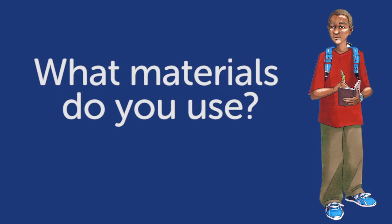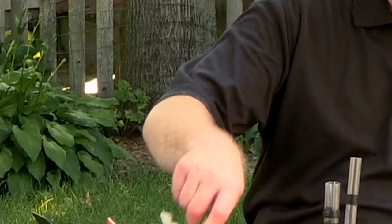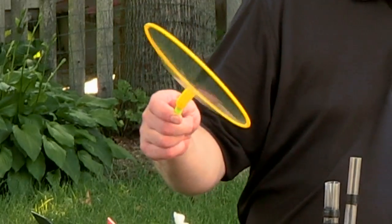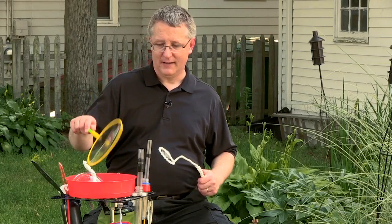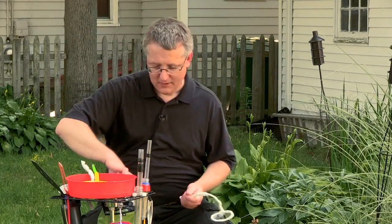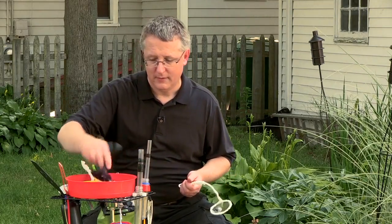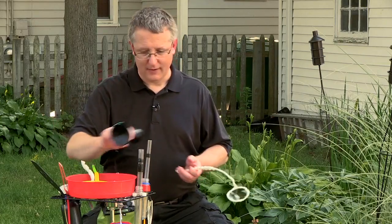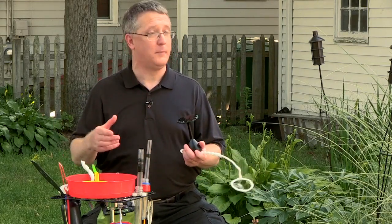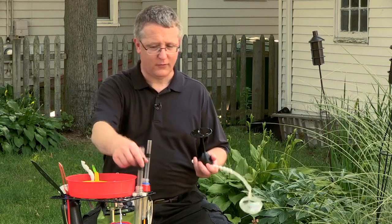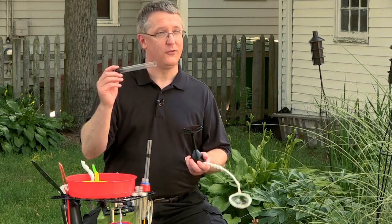What materials do you use? I've discovered that in working with bubbles, your choice of materials — the stuff that you use to make the bubbles — can have a big difference on your success. A simple plastic wand you can get at the store is fine, but that's not going to help you put a small bubble on here. If you want a small bubble, a straw would be best, and although a straw is nice, a slightly larger straw is better.